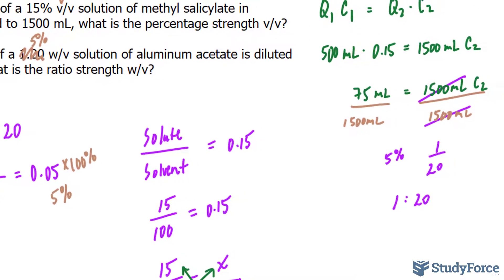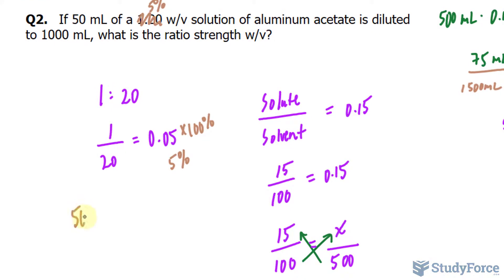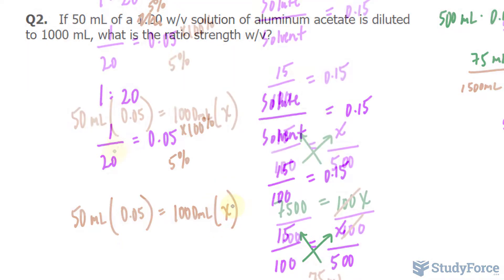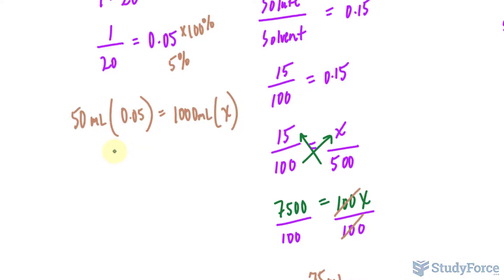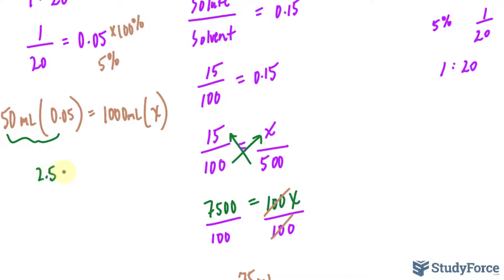Then we will use the formula Q1C1 is equal to Q2C2. We have 50 milliliters multiplied to the concentration of 0.05. Remember, always convert your percentages into a decimal. And that gets diluted to 1000 milliliters. If we solve for X using the same method as before, you multiply this out, 50 times 0.05, and that is 2.5 milliliters. And you multiply this out, which is 1000 milliliters times X, nothing happens.